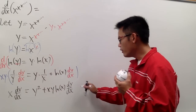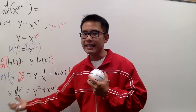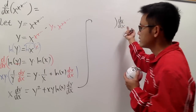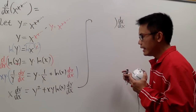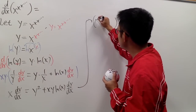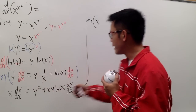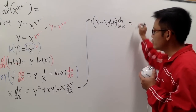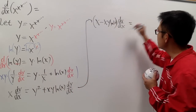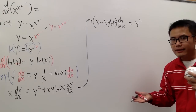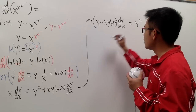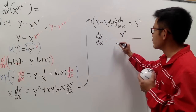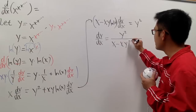Now we move the dy/dx terms to one side and factor out dy/dx. We put dy/dx at the end so the notation is clean. In front we have x, and moving the other term gives us minus xy·ln x. So we have (x minus xy·ln x) times dy/dx equal to y squared. Dividing both sides, dy/dx equals y squared over (x minus xy·ln x).